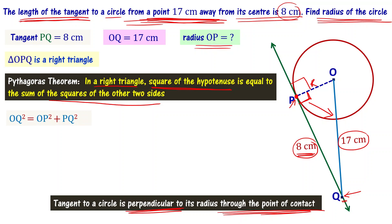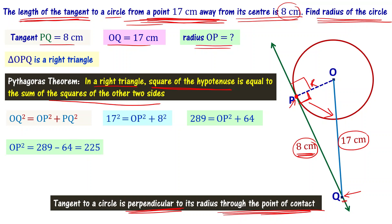Let's substitute: OQ equals 17 and PQ equals 8. So 17 squared equals OP squared plus 8 squared, which gives 289 equals OP squared plus 64. Therefore, OP squared equals 289 minus 64, which is 225. OP equals the square root of 225, that is 15. So the radius of the circle OP is 15 centimeters.